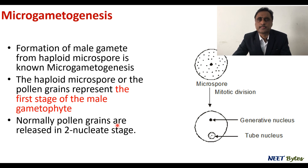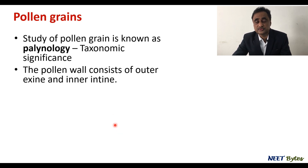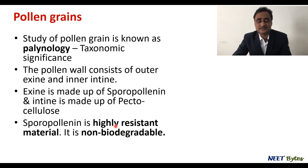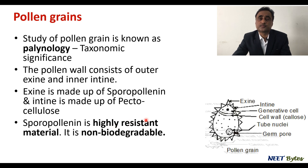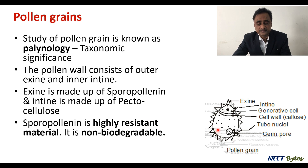Pollen grains have great taxonomic value due to their structure and number of pores called colpi. The study of pollen grains is called palynology. Pollen consists of two outer protective coverings: the outer exine and inner intine. Exine is chemically made of sporopollenin, formed from ubisch bodies in the tapetum — highly resistant and non-biodegradable. Below sporopollenin is another layer called pectocellulose.